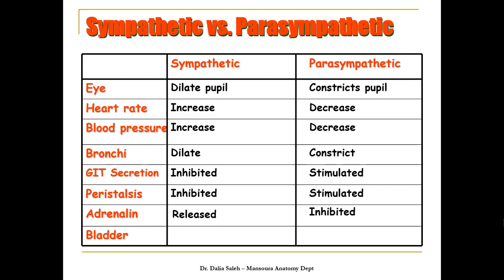For the bladder wall, the sympathetic fibers relax the bladder and constrict the sphincter, while the opposite occurs with parasympathetic stimulation — it contracts the wall of the bladder and relaxes the sphincter, thus helping in diuresis.